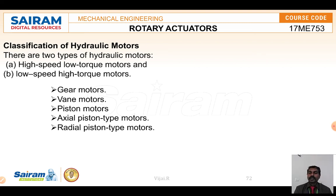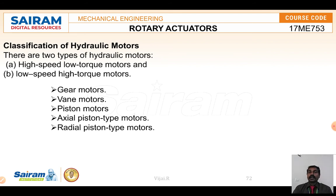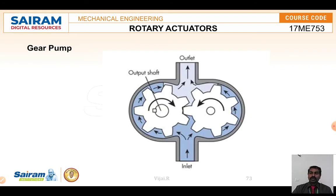Looking at the classifications: there are high-speed low-torque motors and low-speed high-torque motors — gear motors, vane motors, and piston motors. For piston motors there are two different types: axial piston and radial piston.